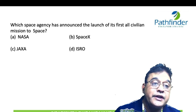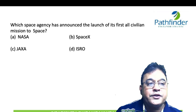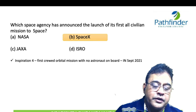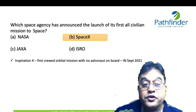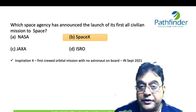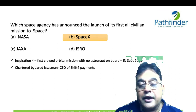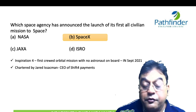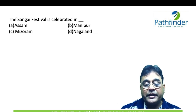Next question: Which space agency announced the launch of its first all-civilian mission to space? The correct answer is SpaceX. The flight was known as Inspiration4 — the first crewed orbital mission with no astronaut on board. This happened in September 2021, and the person in charge was Jared Isaacman, who is the CEO of Shift4 Payments.